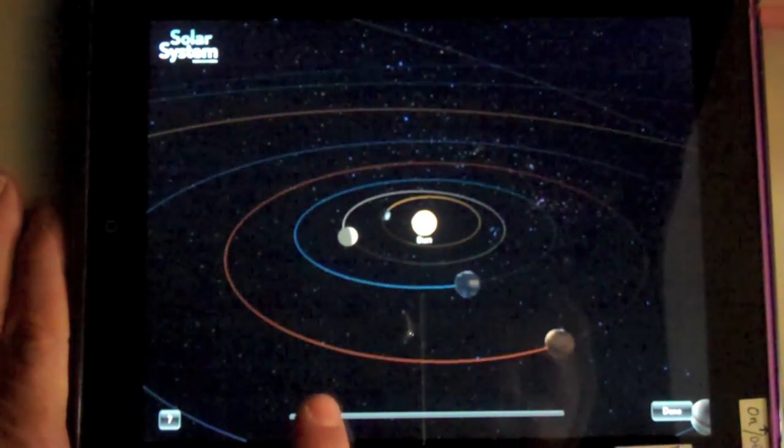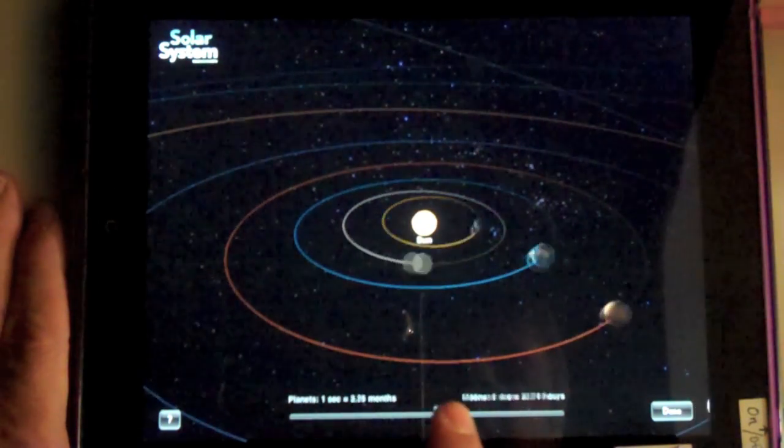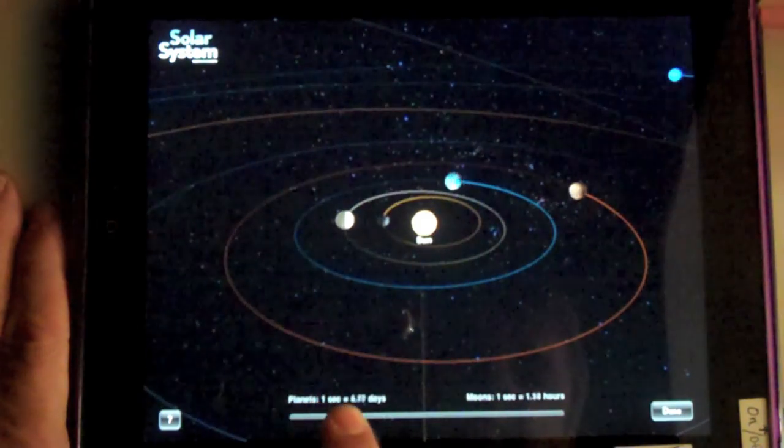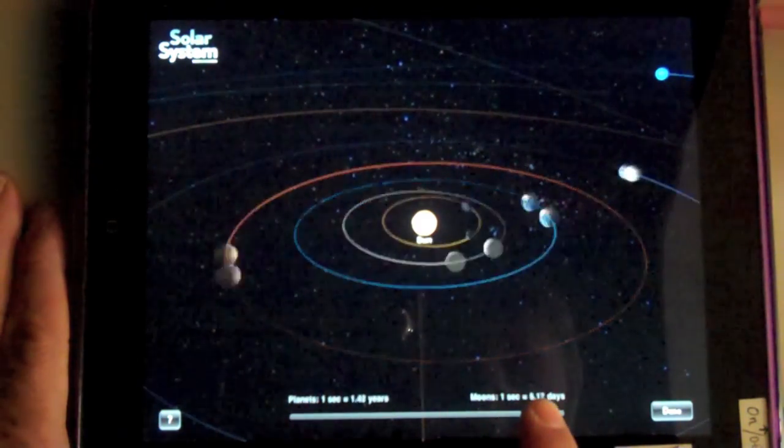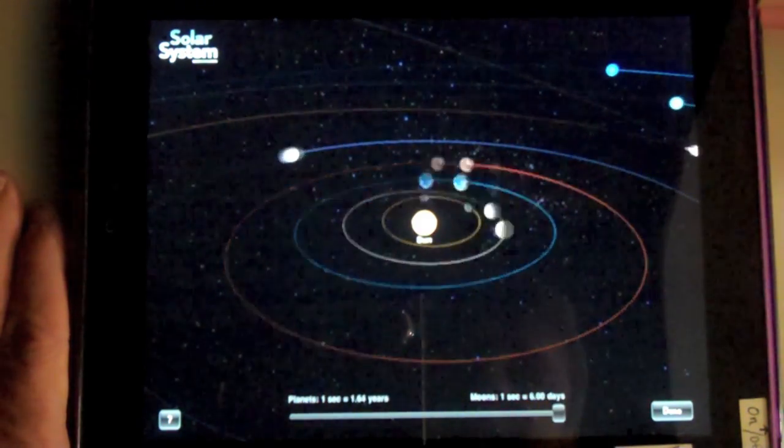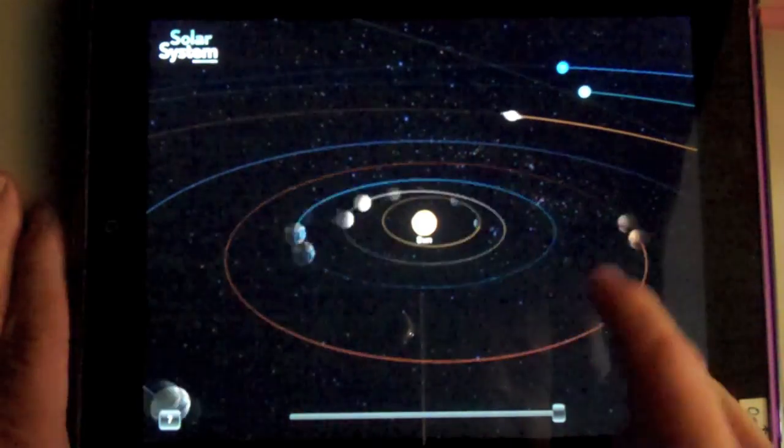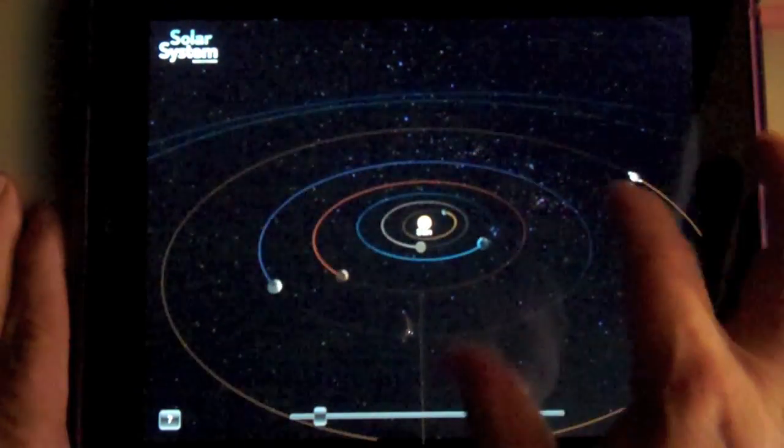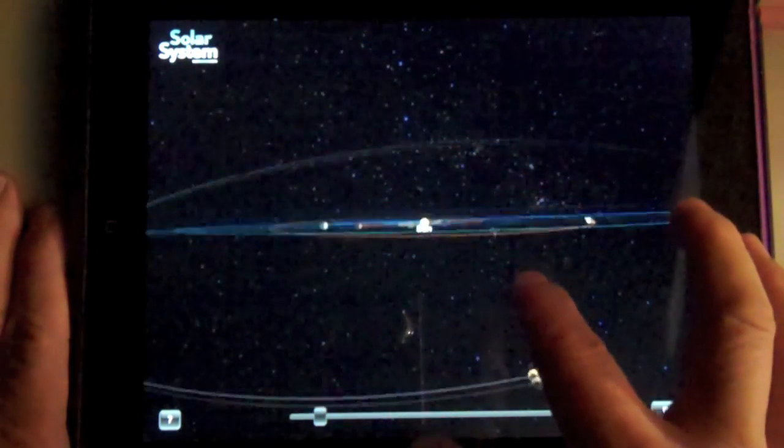Then I can let kids play with the relationship by sliding the time from one second up to one second equals 1.64 years. Obviously that's not something you could easily do with a classroom model. Pretty cool, huh?